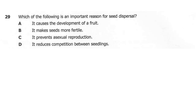Question 29. Which of the following is an important reason for seed dispersal? A: it causes the development of a fruit. B: it makes the seeds more fertile. C: it prevents asexual reproduction. D: it reduces competition between the seedlings. The correct answer here is D. Seeds need to disperse so they do not grow near the parent plant, as they would be competing for the same nutrients. Seed dispersal also allows plants to colonize new areas and prevents extinction in case of natural disasters.